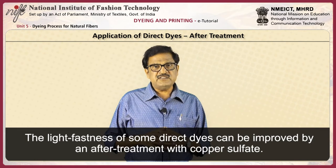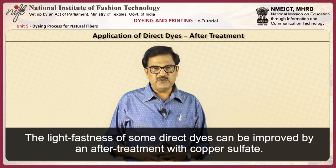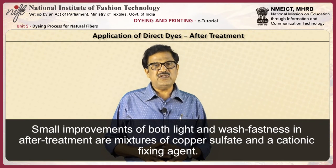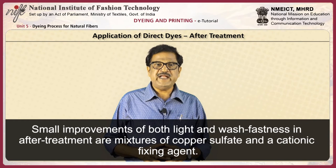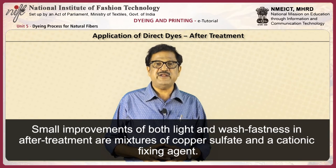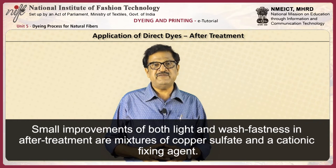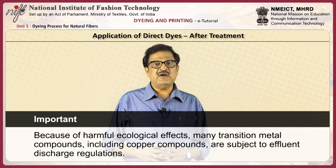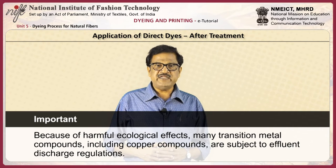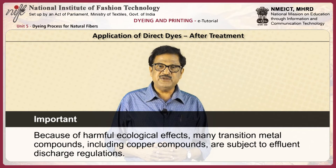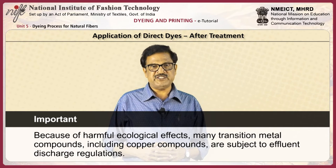The light fastness of some direct dyes can be improved by an after treatment with copper sulfate. Small improvements of both light and wash fastness can be achieved by a mixture of copper sulfate and cationic fixing agent. However, because of harmful ecological effects, many transition metal compounds including copper compounds are subject to effluent discharge regulations.